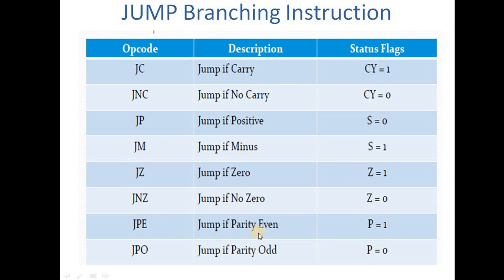JPE: jump if parity even — if our parity flag is set (1), we have to jump; if parity flag is not set, we do normal sequential execution. JPO: jump if parity odd — if the parity flag is 0, it means our number is odd, and if parity flag is 0, we have to jump; otherwise sequential flow. So this way we have covered the jump branching instructions. The call, reset, and return instructions we will tell you in the next part.